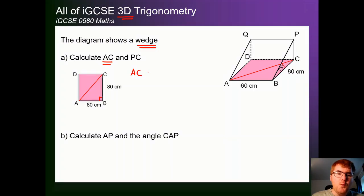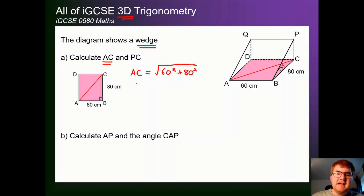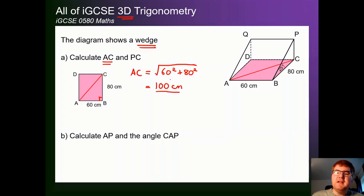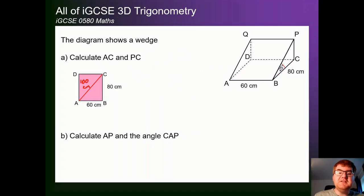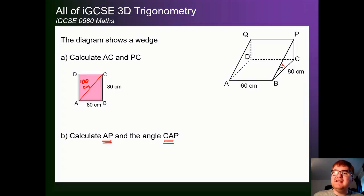I like to do this in one smooth calculation. AC is equal to the square root of 60 squared plus 80 squared. If we put that into our calculator, it's one of these lovely exact values — this gives us exactly 100 centimeters. So we can use 3D Pythagoras by breaking things down into 2D. Now we've got 100 centimeters for AC, which makes working out AP that much easier, and we can also work out the angle CAP.